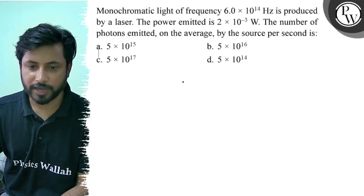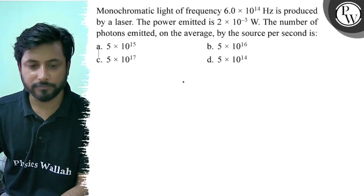The number of photons emitted on average by the source per second is: A) 5 × 10^15, B) 5 × 10^16, C) 5 × 10^17, D) 5 × 10^14.